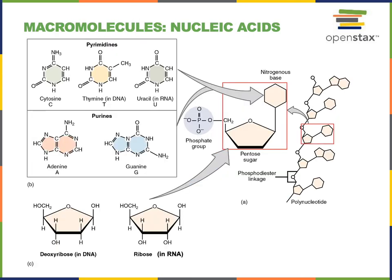Here we can see the structure of the five different nitrogenous bases found in nucleic acid nucleotides. Cytosine, thymine, adenine, and guanine are all found in DNA polymers. In RNA there is no thymine, but instead uracil takes the place of thymine. We can also see the structures of deoxyribose found in DNA nucleotides and ribose found in RNA nucleotides.